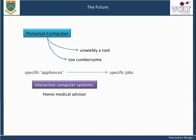Norman envisions information appliances such as: the home medical adviser, where sensors in the home will enable blood pressure, temperature, weight, body fluids, and so on to be automatically monitored. A computer could use these readings to assist with medical advice or to contact a human doctor. Digital picture frames — give this frame to a friend or relative. When you have taken a new picture you want them to share, simply email the picture directly to the frame, which will be connected to the net wirelessly.